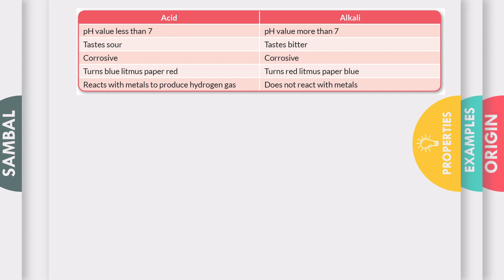Meanwhile, alkali has a pH more than 7. They taste bitter and they are corrosive as well. However, they change the litmus paper from red to blue, and they do not react with metals.